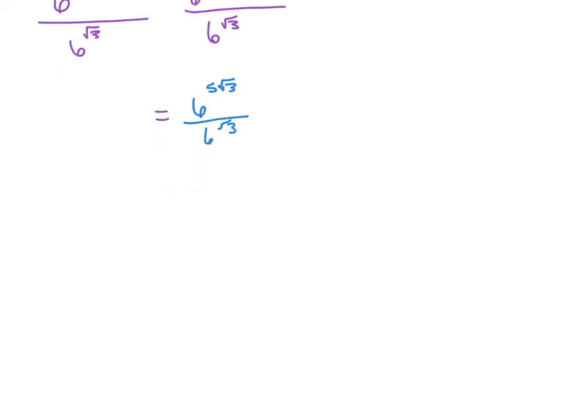All right, so now that we have the numerator simplified to one number, and the denominator already is one number, let's go ahead and see what we do here. So we're dividing the same base, we have a 6 over a 6, so that means we keep the 6, but we subtract the exponents.